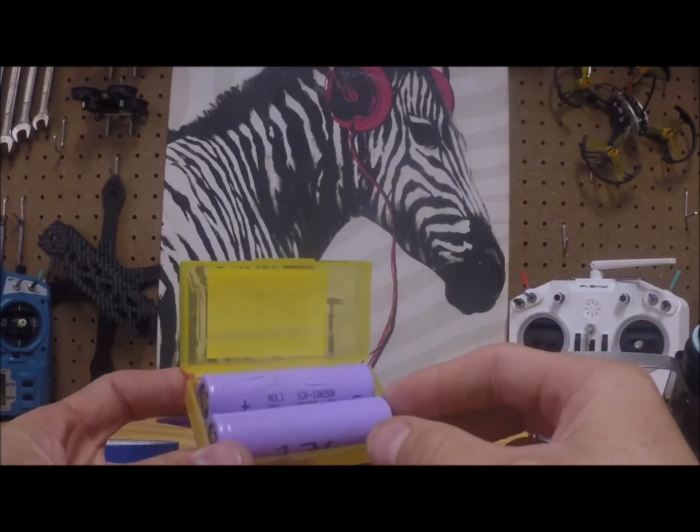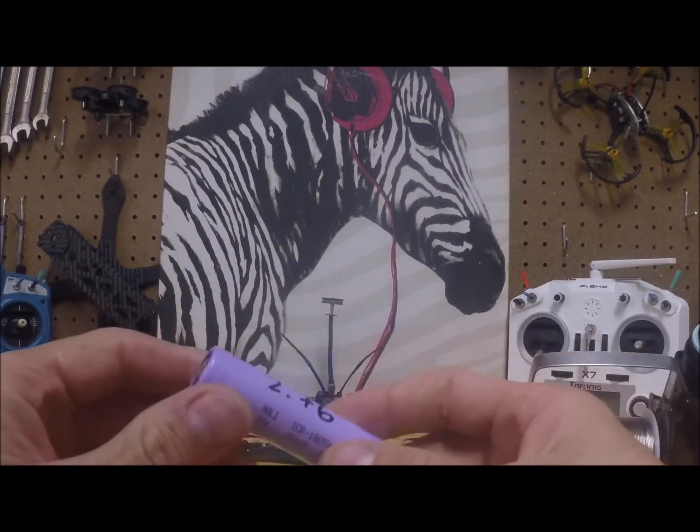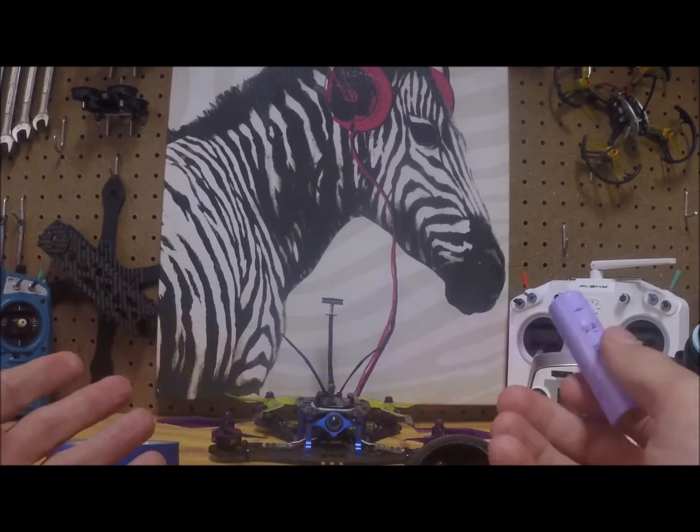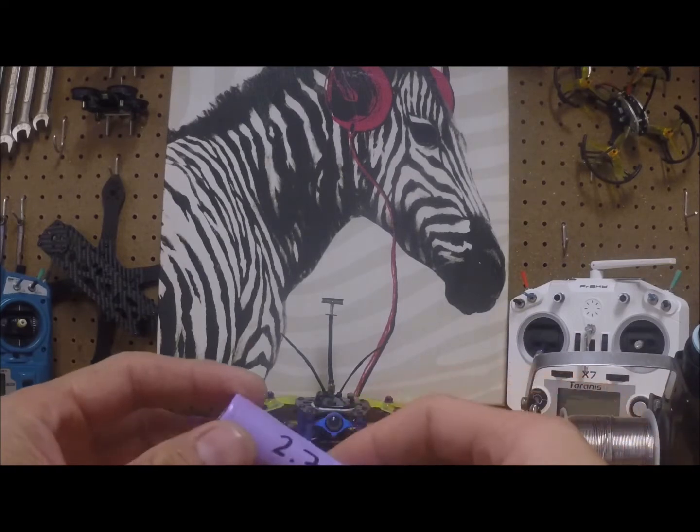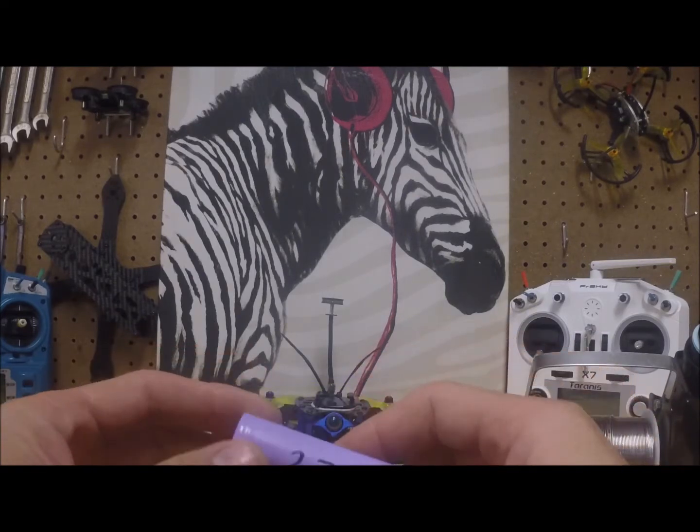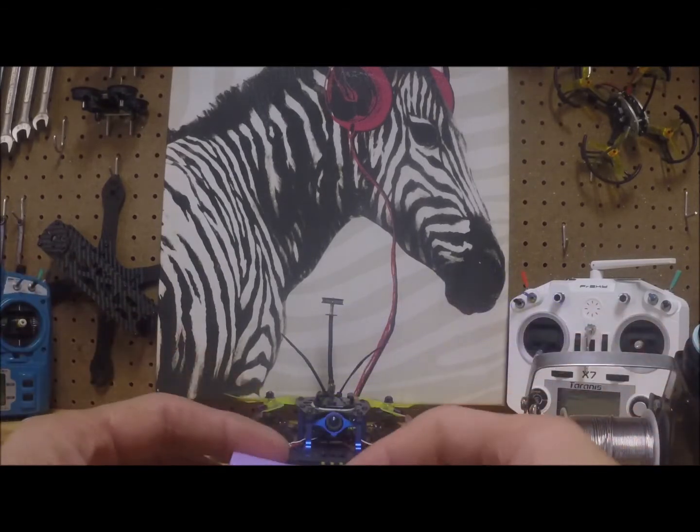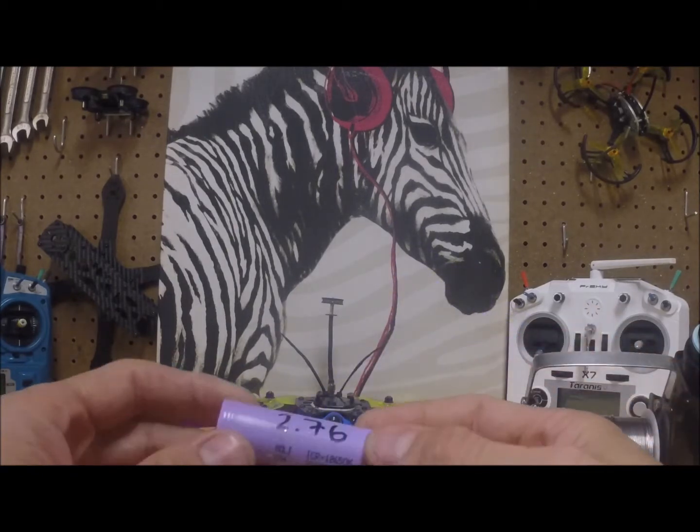You just got to decase them and test the cell voltages. Most people throw away theirs because they get bad laptop batteries and they think the whole thing is useless. Well usually it's just like one or two cells in there that are dead, so they throw the whole thing away. But if you decase them and take each of those batteries out, test each one of them, you'd be surprised you might have some worth saving.